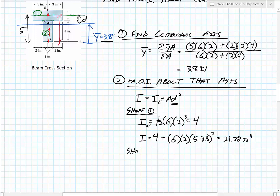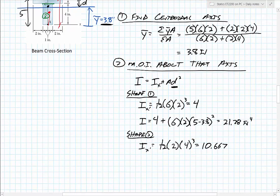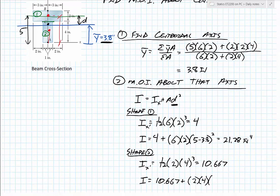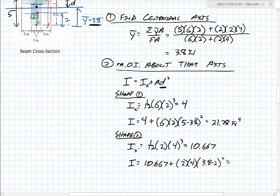For shape 2, the centroidal moment of inertia is 1/12 × 2 × 4³ ≈ 10.667. Applying the parallel axis theorem: the moment of inertia equals 10.667 plus the area (2 × 4) times d squared. The d for shape 2 is 3.8 minus 2, since the centroid of shape 2 is 2 from the bottom and the overall centroid is at 3.8. Squaring that and multiplying gives a total moment of inertia for shape 2 of approximately 36.589 in⁴.